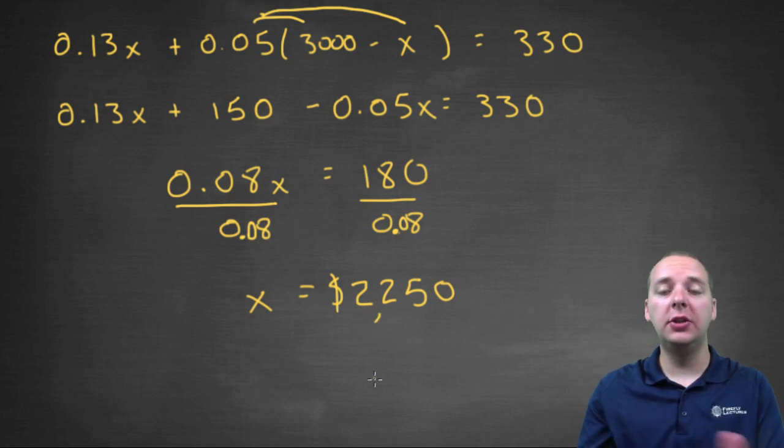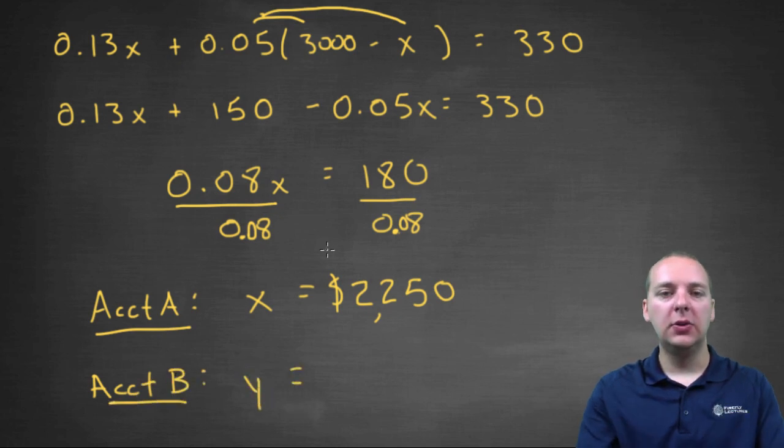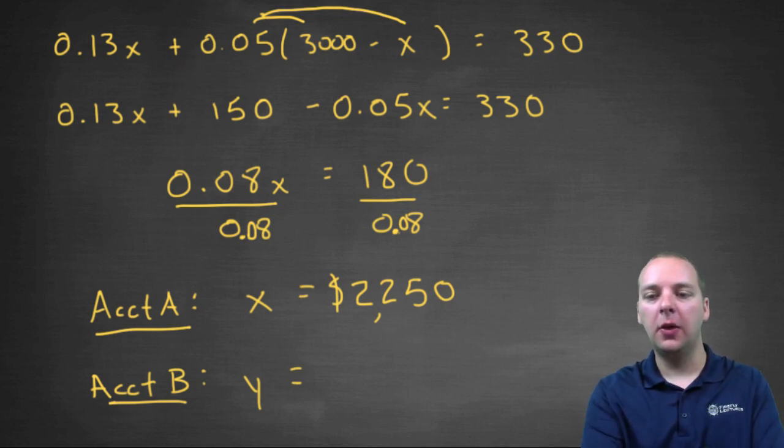But now remember, that was just account A, that was the X value. This is account A, and we also need the amount in account B as well, that was the Y value. So to get the Y value, you can use any old equation. I think I'll use the one where we had Y was equal to three thousand minus X. So if your X is twenty two fifty, then your Y value would be seven hundred and fifty dollars.